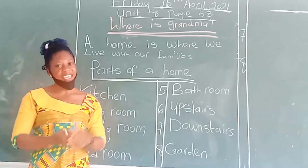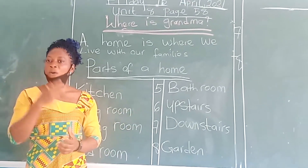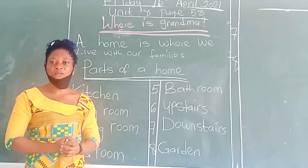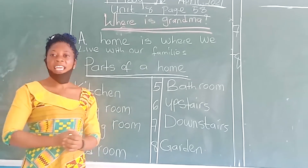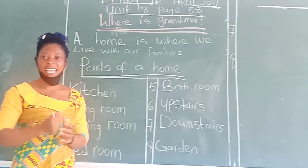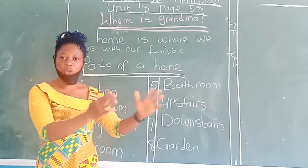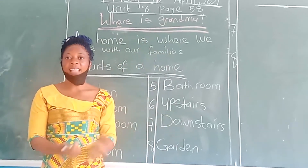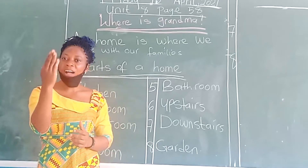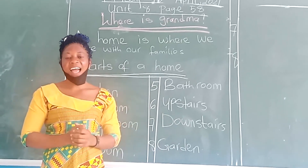We go to the dining room. The dining room is the part of the home where we eat. When mommy finishes cooking, she serves food in the dining room and the entire family goes there. So the part of the house where we go to eat is called the dining room. In the dining room, we have the table, we have chairs and other items.